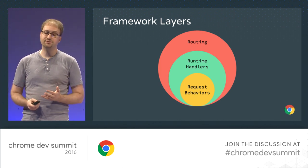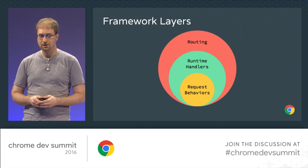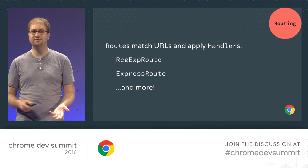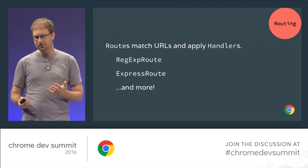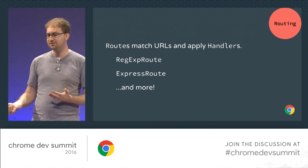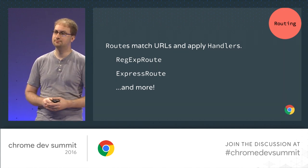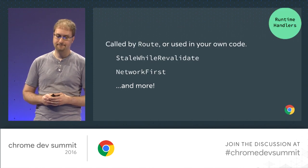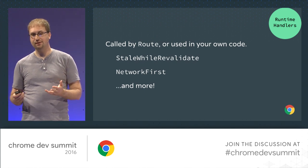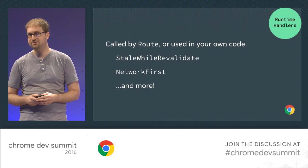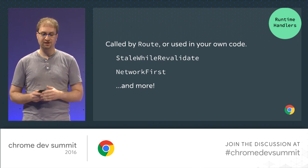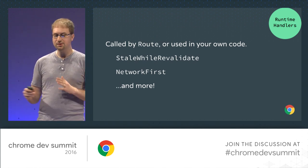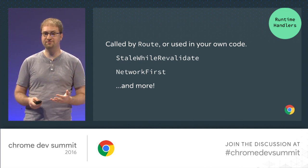Conceptually, we split the new framework into three layers: routing, runtime handlers, and request behaviors. The routing layer is responsible for setting up fetch handlers that respond to specific types of requests — we're envisioning built-in classes to handle regular expression and express-style routes, similar to how SW Toolbox is configured for runtime caching. Going down one layer, the runtime handler layer is a set of classes implementing common runtime caching strategies like stale-while-revalidate or network-first. By default they won't modify outgoing requests and will use an appropriate cache based on the service worker's registration scope, but we wanted a flexible way of opting into different behaviors to customize those defaults for your application.